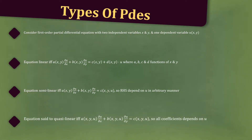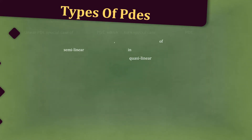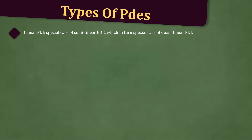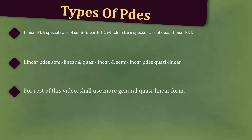The equation is said to be quasi-linear if and only if a(x, y, u) times the partial derivative of u with respect to x, plus b(x, y, u) times the partial derivative of u with respect to y, equals c(x, y, u), so all the coefficients can now depend on u. Note that a linear PDE is a special case of a semi-linear PDE, which in turn is a special case of a quasi-linear PDE. For the rest of the video, we shall use the more general quasi-linear form.